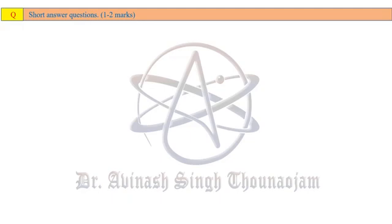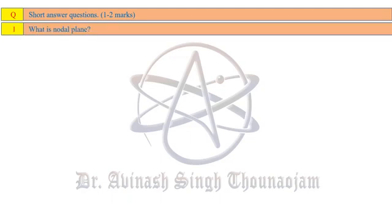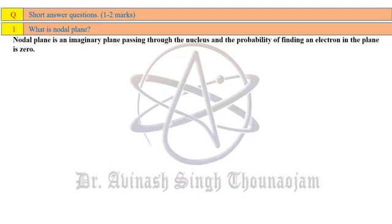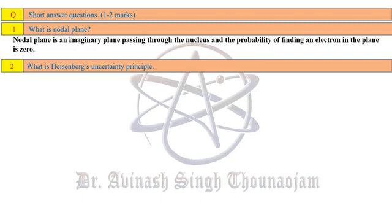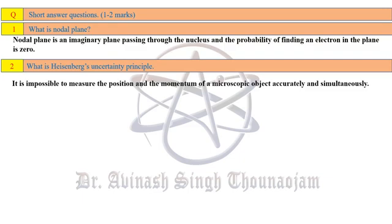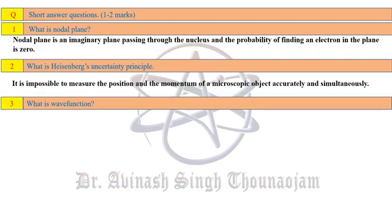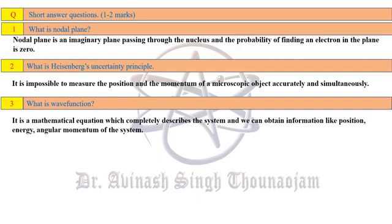Short answer type: What is a nodal plane? It is an imaginary plane which passes through the nucleus and the probability of finding an electron in the plane is zero. What is Heisenberg's Uncertainty Principle? It is impossible to measure the position and momentum of a microscopic object accurately and simultaneously.